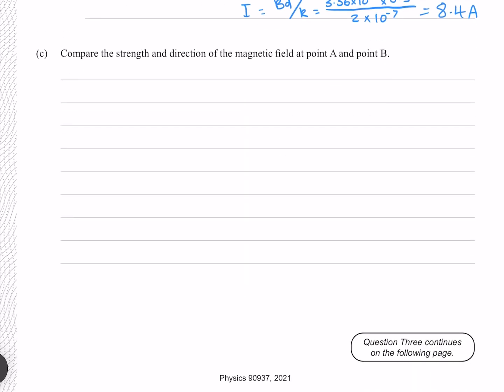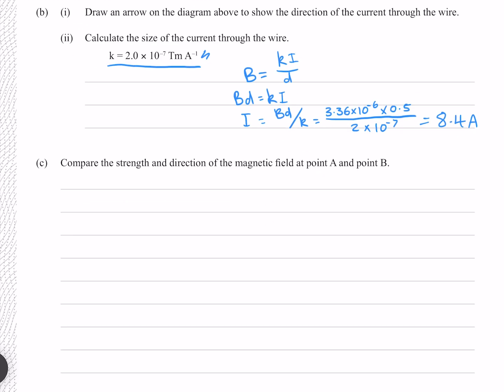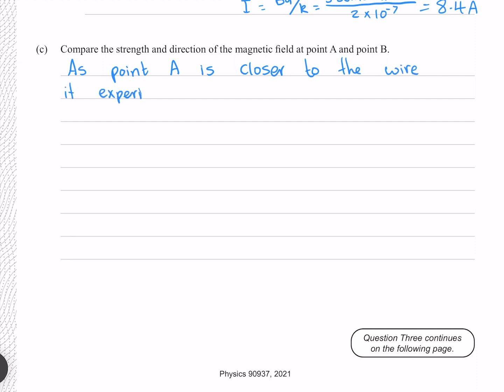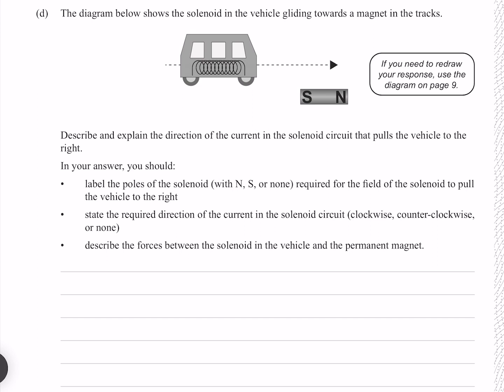Compare the strength and direction of the magnetic field at point A and point B. Point A is closer to the wire, so the field lines are closer together, indicating the field at point A is stronger. As for direction, the field at point B is towards the left, while the field at point A is towards the right. Since point A is closer to the wire, it experiences a stronger field than point B.